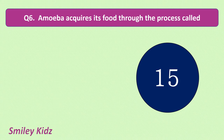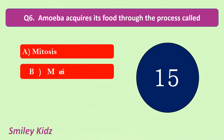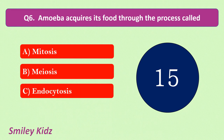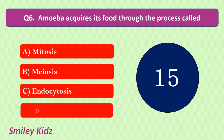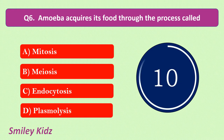Question number 6. Amoeba acquires its food through the process called. Your options are: mitosis, meiosis, endocytosis, plasmolysis. Your time starts now.